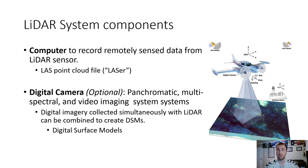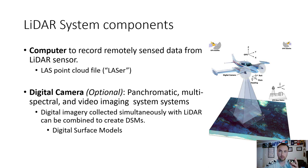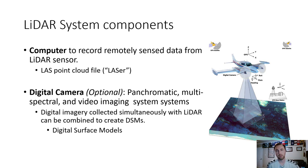Digital imagery collected simultaneously with LiDAR data can be combined to make high-resolution DSMs overlaid with photographs — essentially what you see in Google Maps or Google Earth. When you zoom into downtown Los Angeles, you see highly accurate terrain or surface models with the actual textures of the buildings overlaid on top — a combination of a panchromatic image overlaid over the digital surface model.